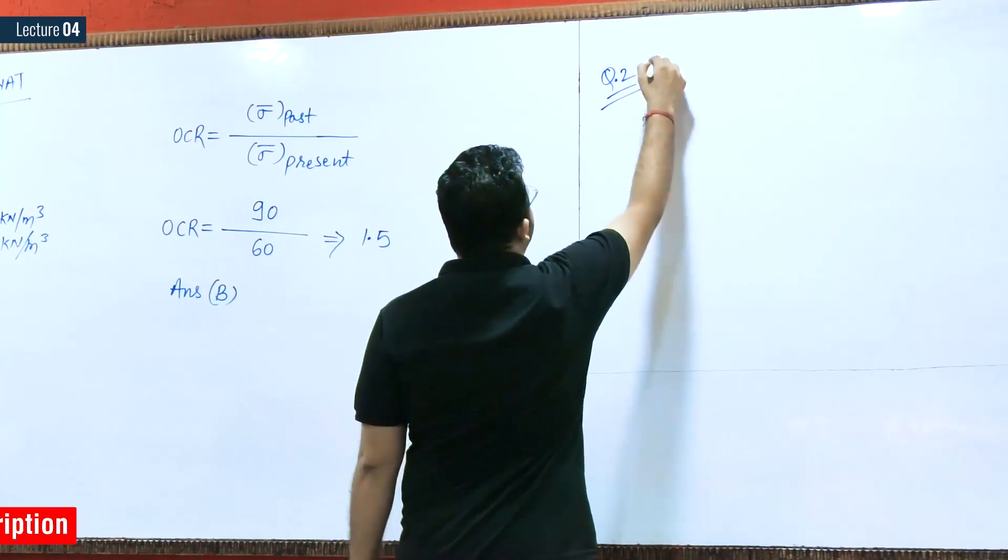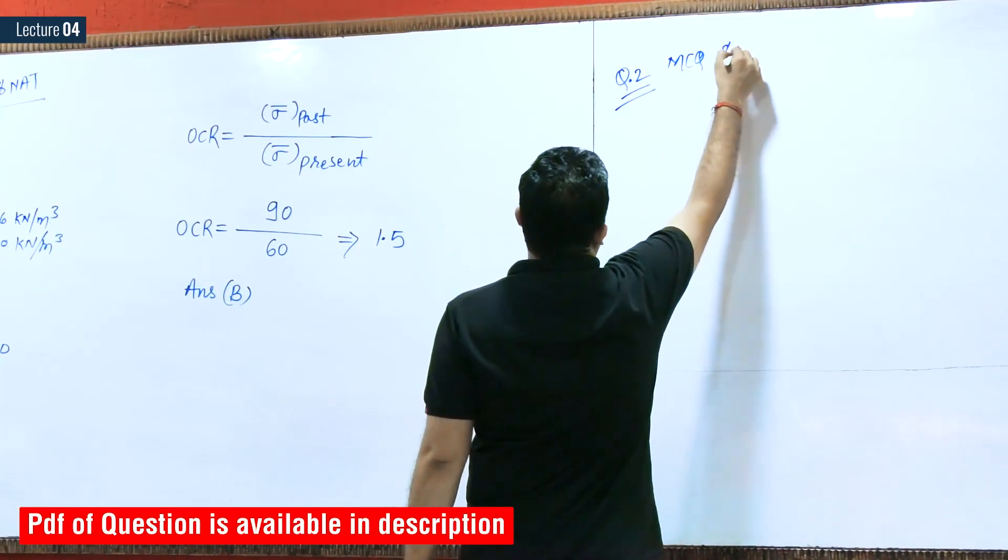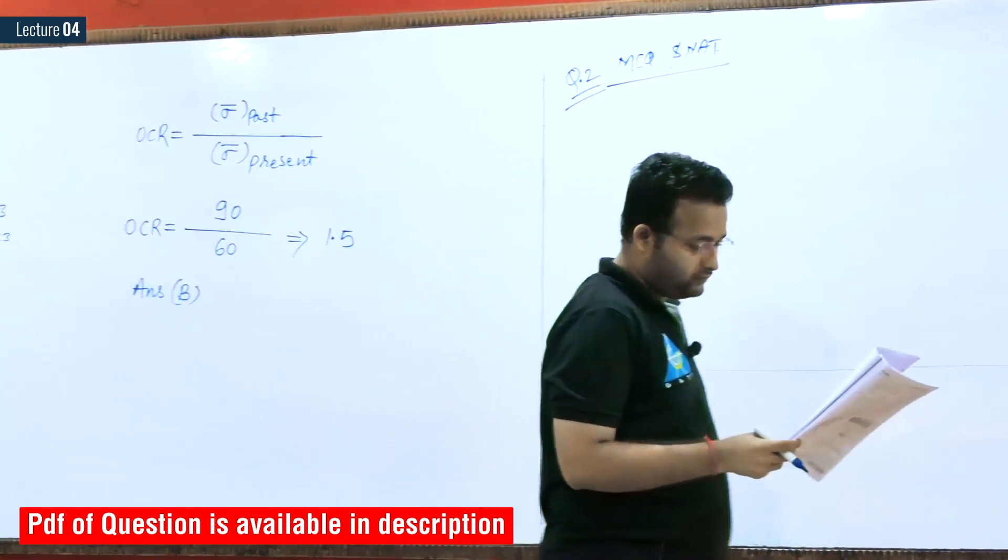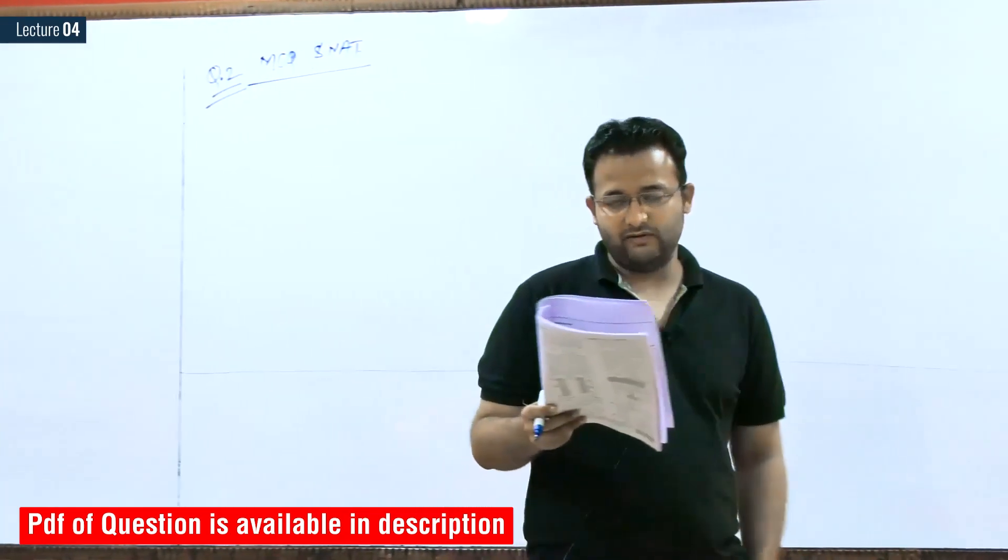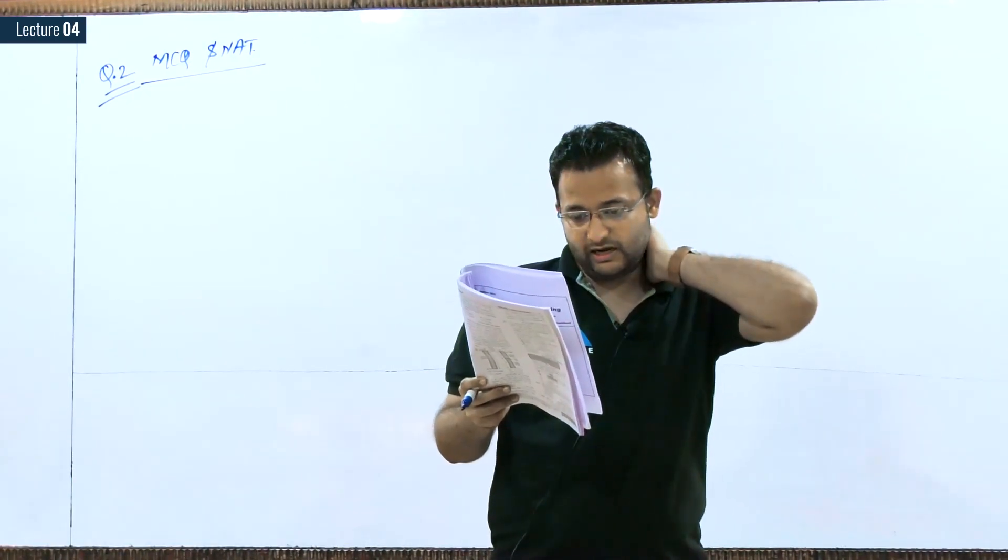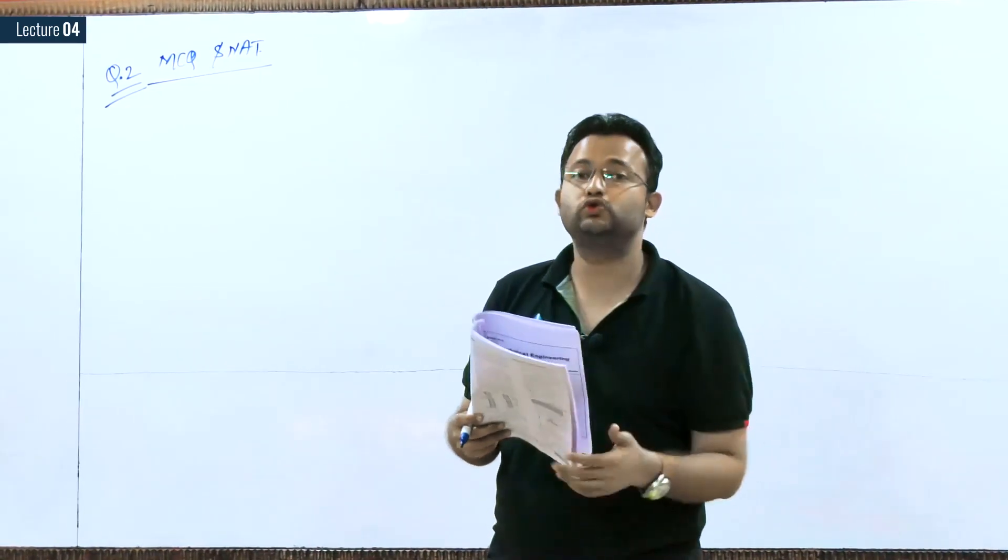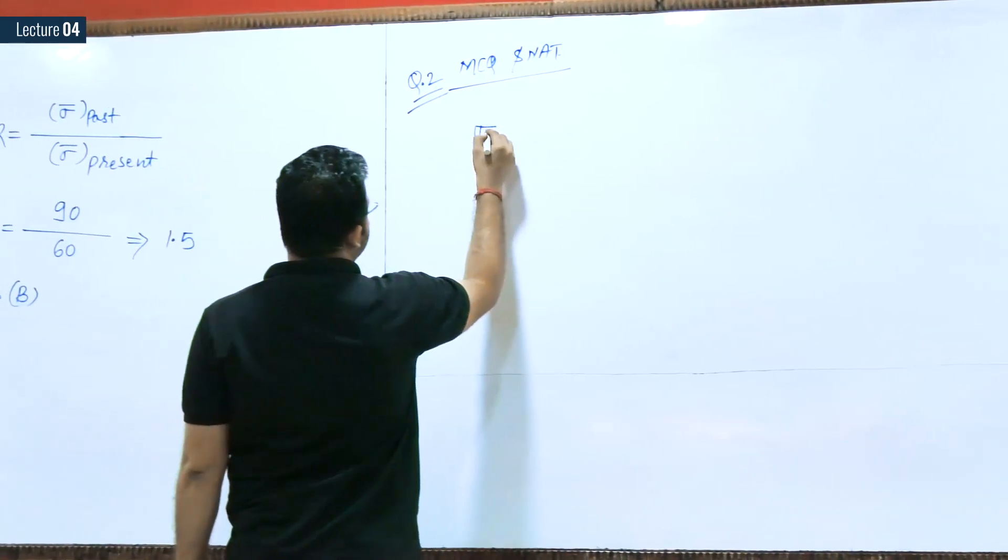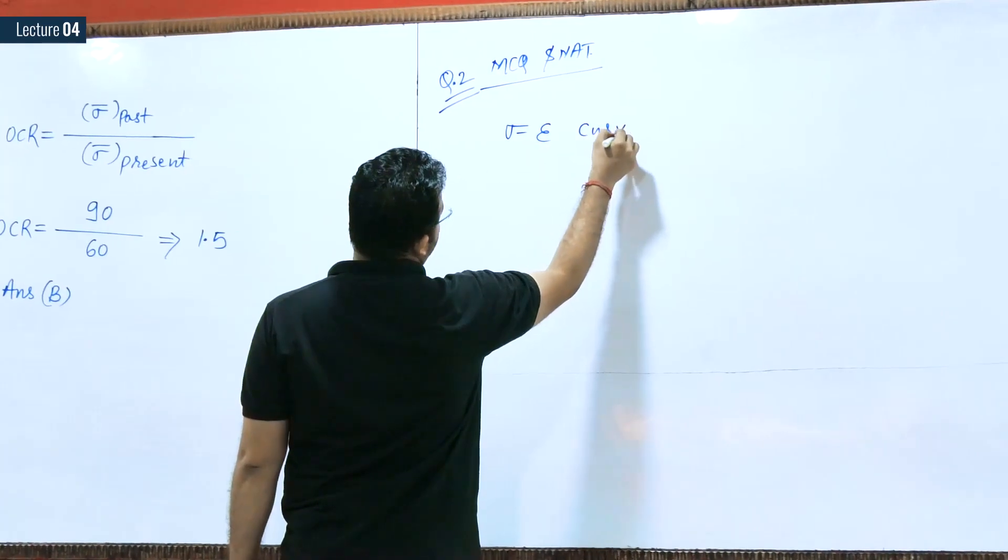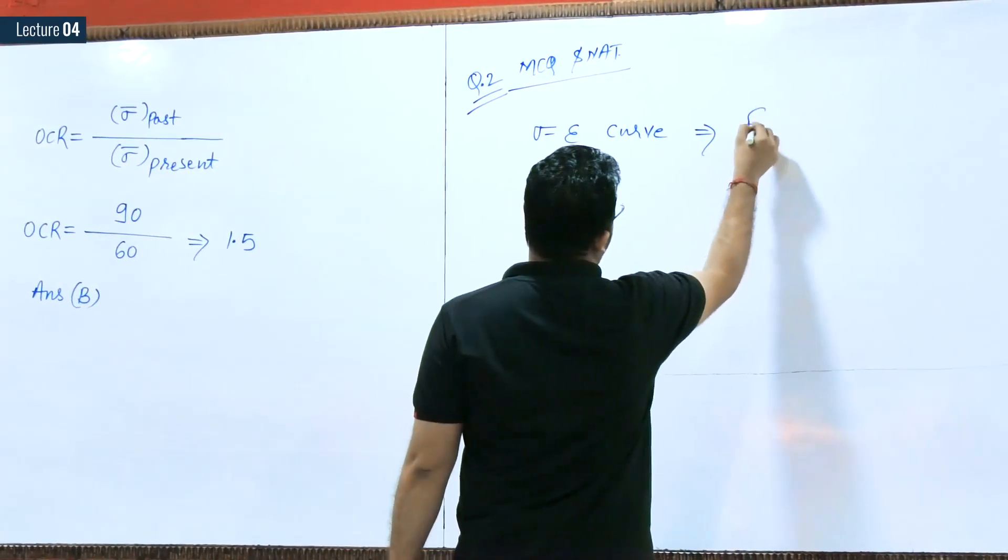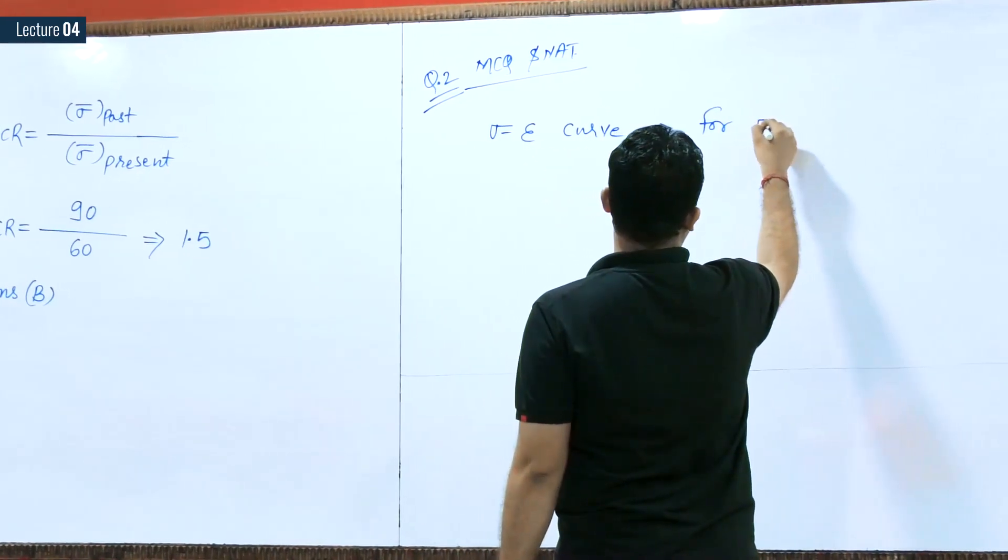In question number 2, if you see, they have given actually different types of curves—two curves they have given—and they are asking the stress-strain behavior of the soil that is shown in the figure.